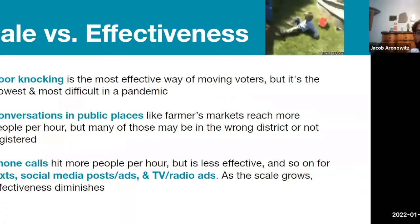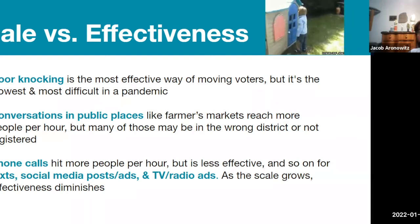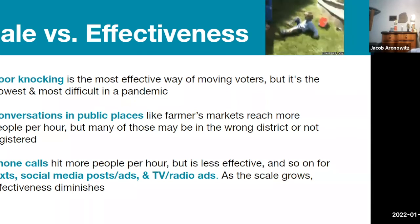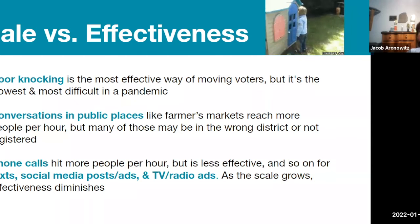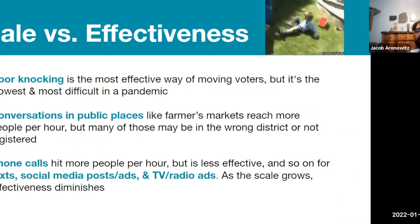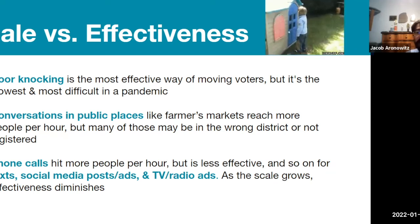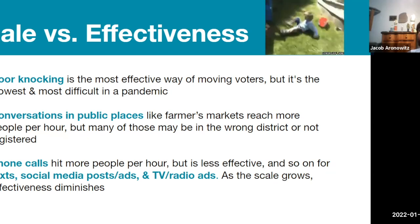Phone calls can be much more targeted with a list, especially when you have an automated dialer. Phone calls can hit more people per hour but are less effective than door knocking, and typically less effective than stationary canvassing at events, although you can do a lot to move that. This relationship goes for texts and social media posts and other on-mass media forms — the more people you're hitting at once, as the scale grows, the effectiveness diminishes per person.